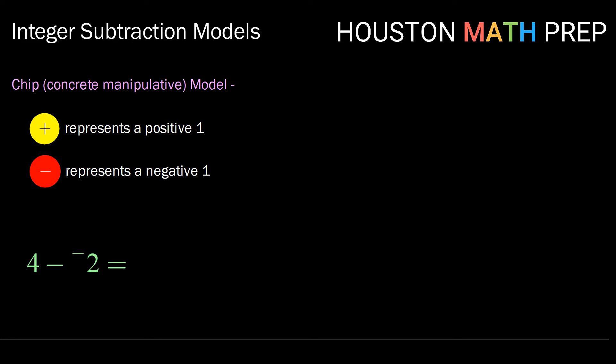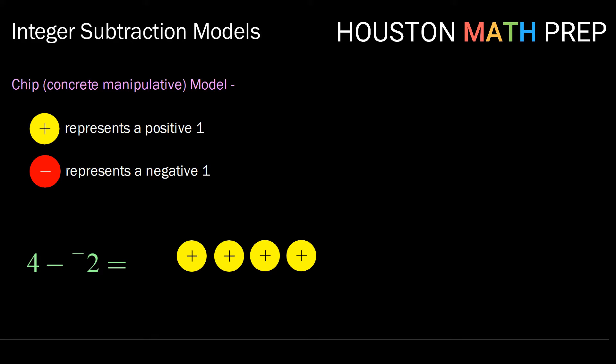If we want to model four minus negative two, we notice that if we were to just place four positive chips, we would have no way of taking away any negative chips. So what we need to do is add copies of zero or pairs, a positive and a negative, until we have two negative chips to take away. Then we can take those two negative chips away and see what we have left. We have six yellow or positive chips left. So four minus negative two is six.